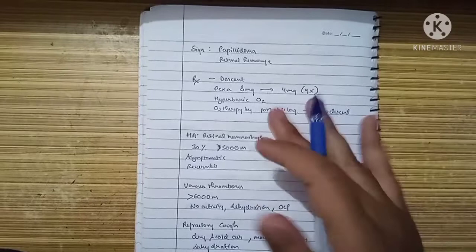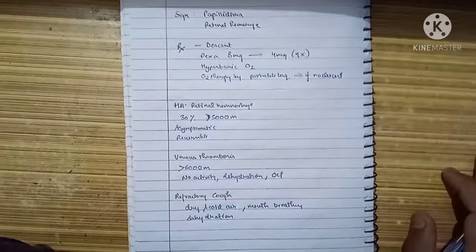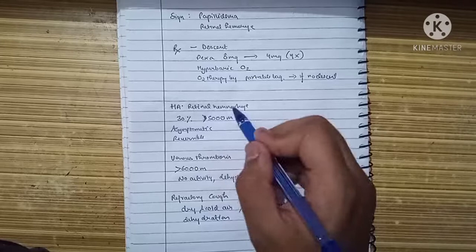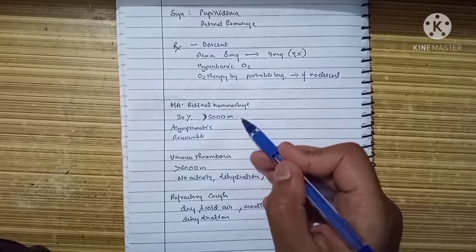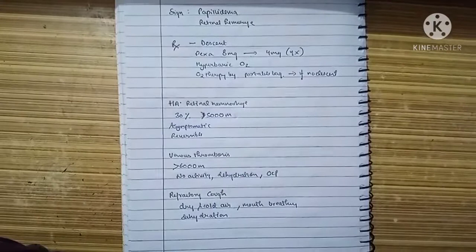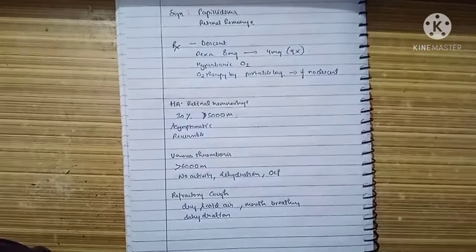Let's talk about minor conditions. High altitude retinal hemorrhage is seen in 30% of trekkers who visit altitudes above 5,000 meters. This condition is generally asymptomatic unless retinal hemorrhage involves the macula area, which is less common. It's a reversible condition.